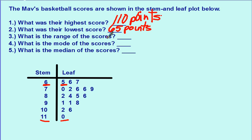What is the range of your scores? So your range will be your high minus your low. So 110 minus 65. You don't need to borrow here. 45 points will be your range of scores.